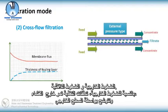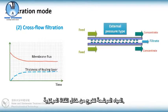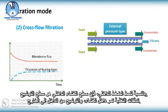For the external pressure type, the feed flows outside of the membrane and is filtered by the external surface. Driven by pressure, components smaller than membrane pore size penetrate inside of the membrane. The filtrate is discharged through the central channel.